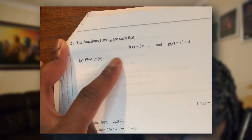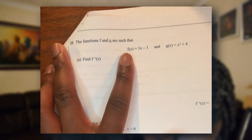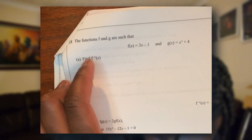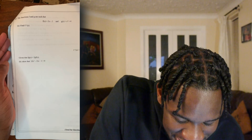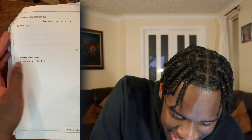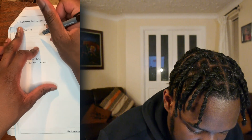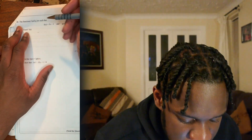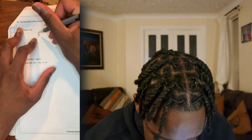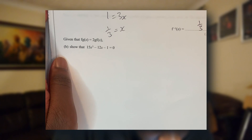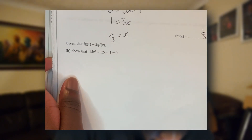The functions f and g are such that — find the inverse of f. I think inverse just means find x. I just found x. Give that function fg equals the function 2gf — show that 15x squared minus 4x minus 1 equals 0.